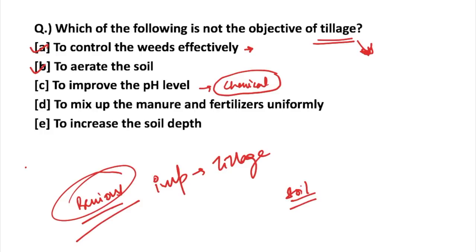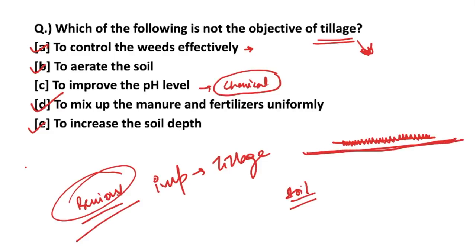Another objective is to mix manure and fertilizers uniformly — this is also correct. Next is to increase the soil depth: by using tillage methods we can go beneath the existing area, so increasing soil depth is an objective as well. So as per this question, to improve the pH level is not the correct objective of tillage — that is the answer.